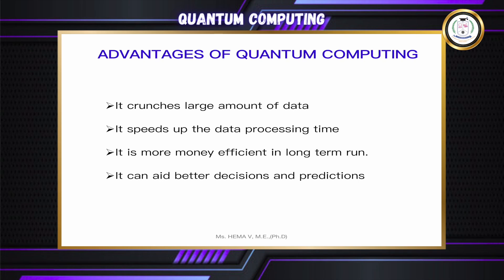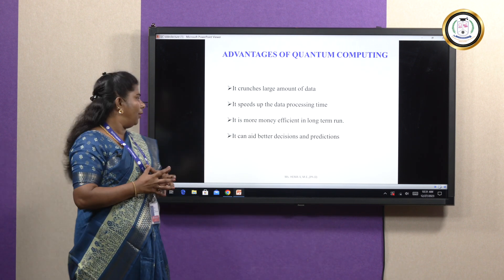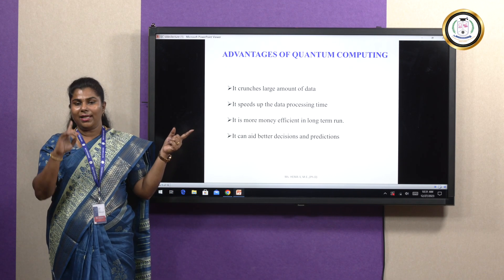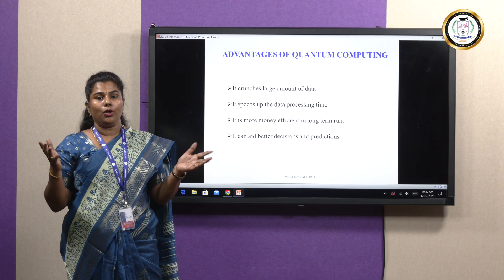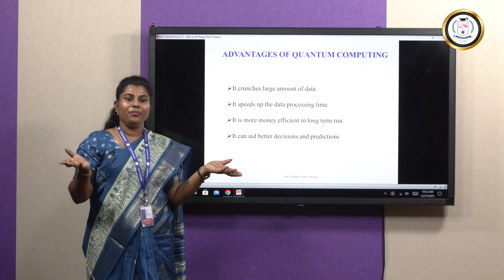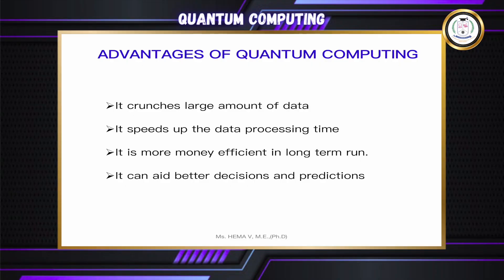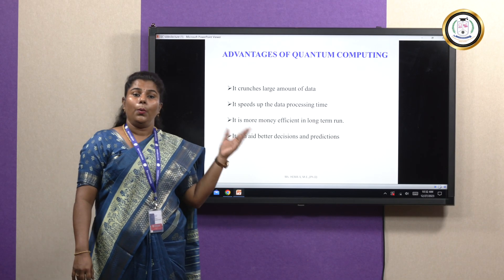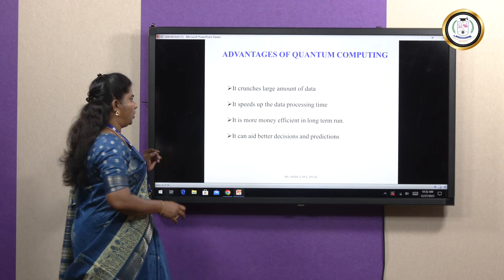What are the advantages of quantum computing? It crunches large amounts of data. It speeds up the data processing time — as shown in the example, the lock took 4 seconds classically but only 1 second with quantum computing. For big complex problems, solutions are found within a fraction of a second. It is more money efficient in the long term, and it can aid better decisions and predictions.